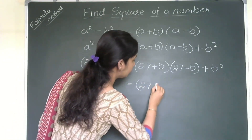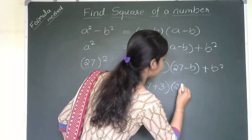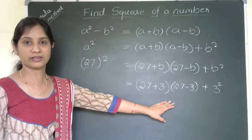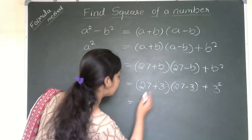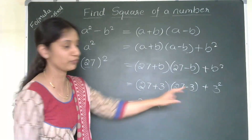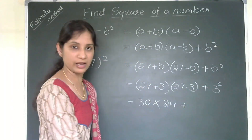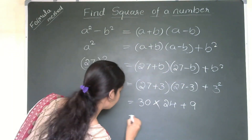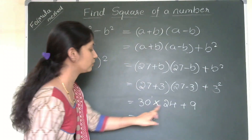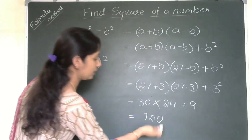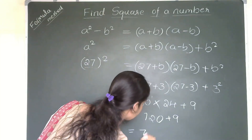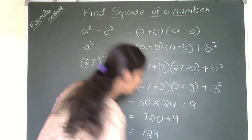So it becomes (27 + 3)(27 − 3) + 3² = 30 × 24 + 9. Now for the multiplication: 3 × 4 = 12, write 2 carry 1; 3 × 2 = 6 plus 1 = 7, then the trailing zero gives 720. So 720 + 9 = 729. The square of 27 is 729. Please cross-check this.